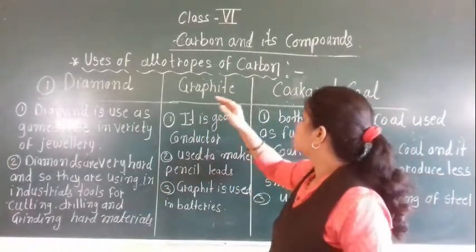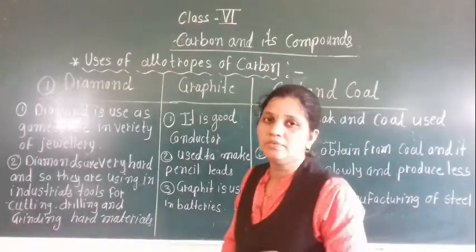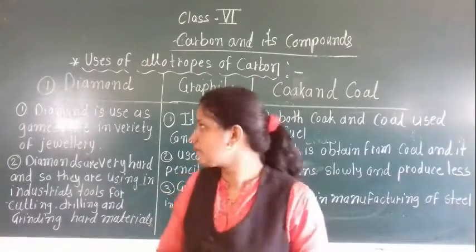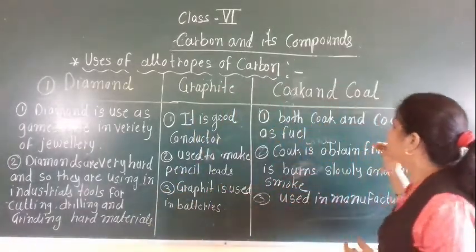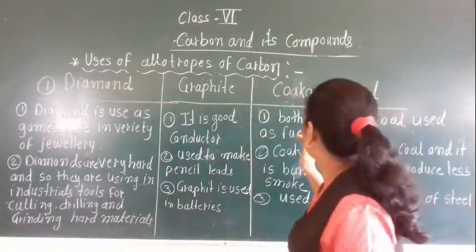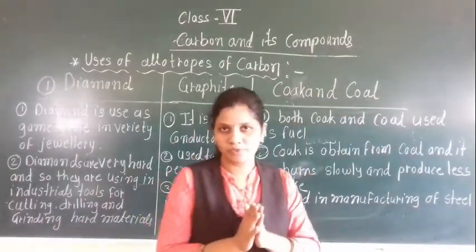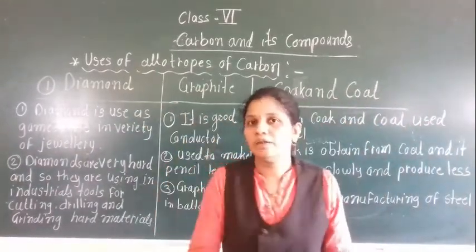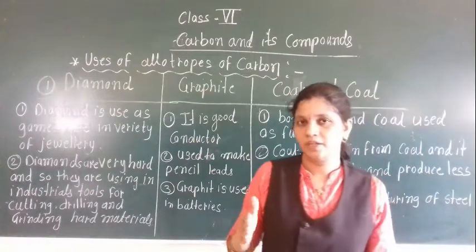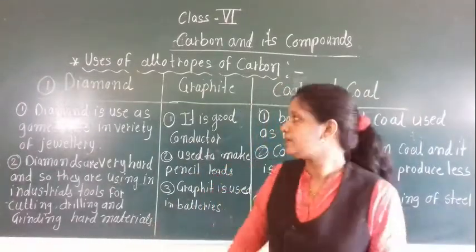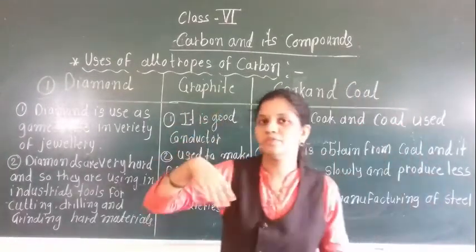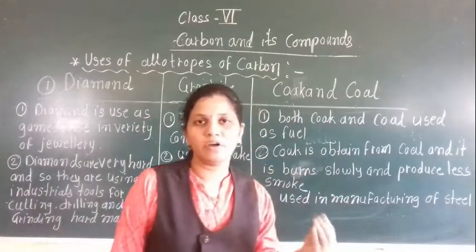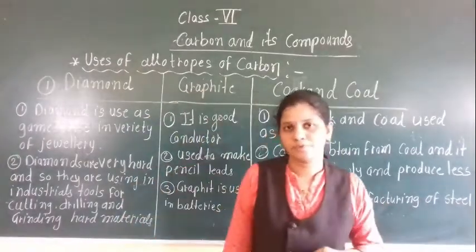Now let's see the uses of allotropes of carbon. We have known these examples: diamond, graphite, coke, and coal. Now you tell me — diamond and graphite, are they crystalline or amorphous? Correct. These two are the examples of crystalline allotropes of carbon. And coke and coal — these two are examples of amorphous allotropes of carbon.